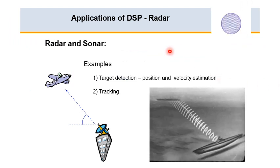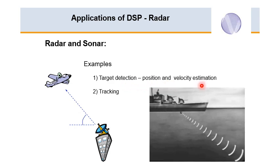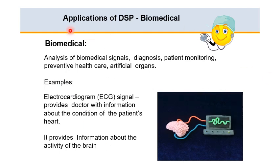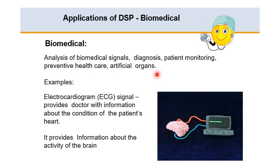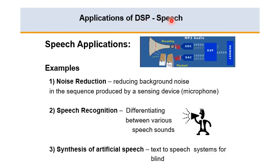Applications of DSP include radar and sonar for target detection, position and velocity estimation, and tracking. In biomedical engineering, DSP is used for analysis of biomedical signals, diagnosis, patient monitoring, preventive healthcare, and artificial organs. For example, the ECG signal gives doctors information about the patient's heart condition, and DSP is also used to analyze brain activity.